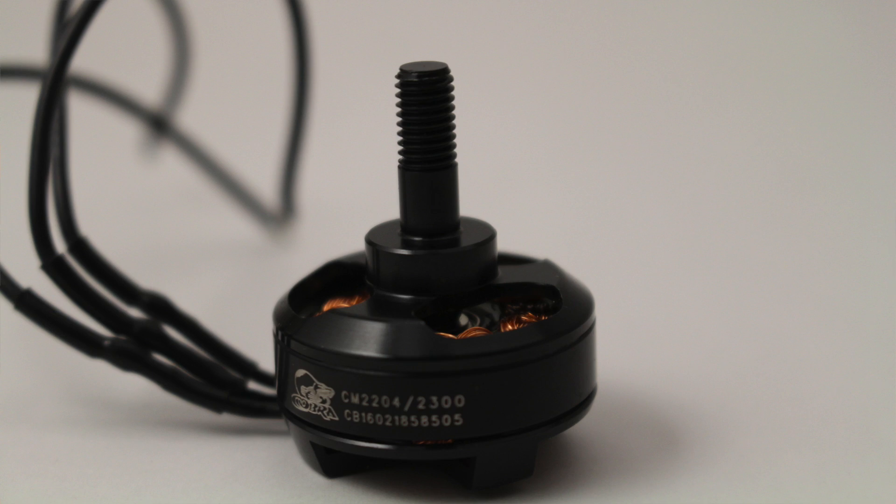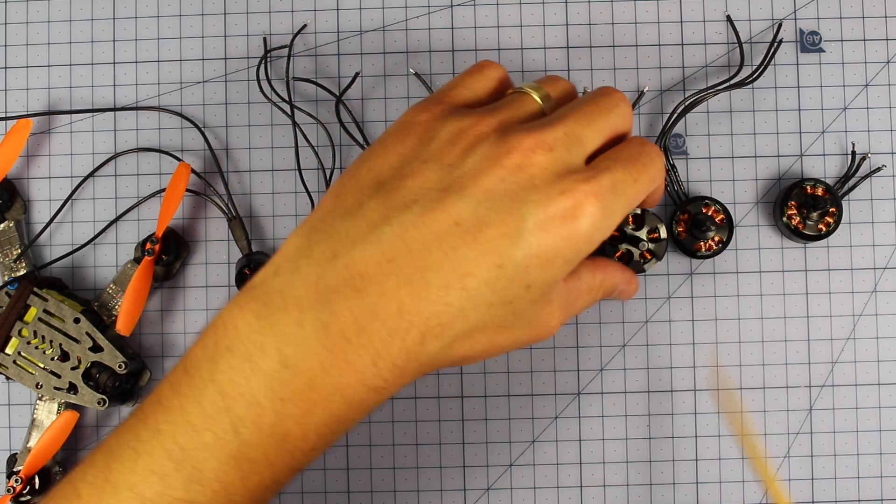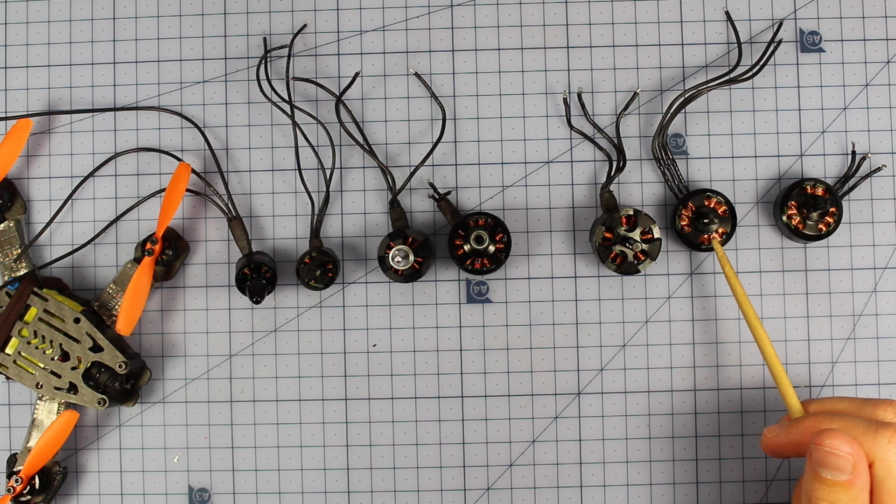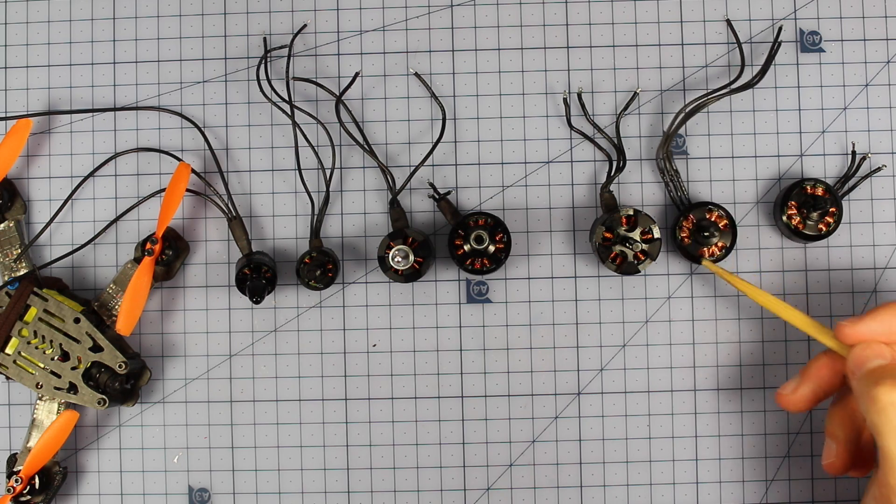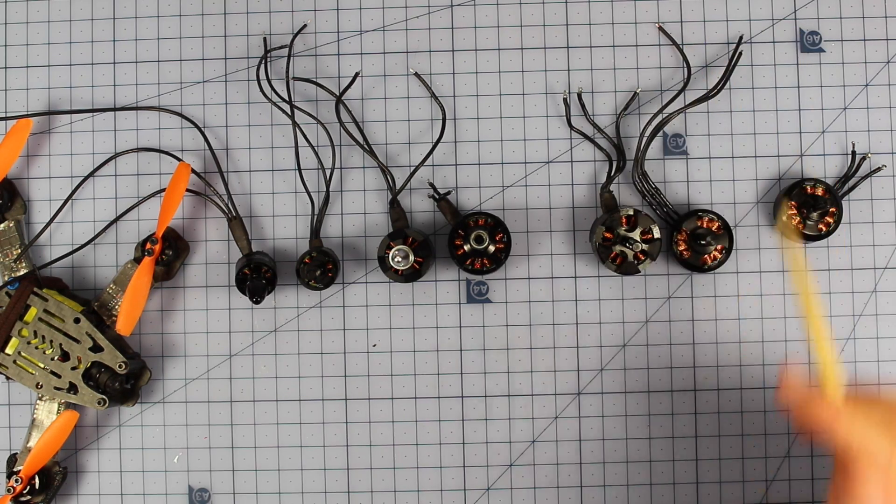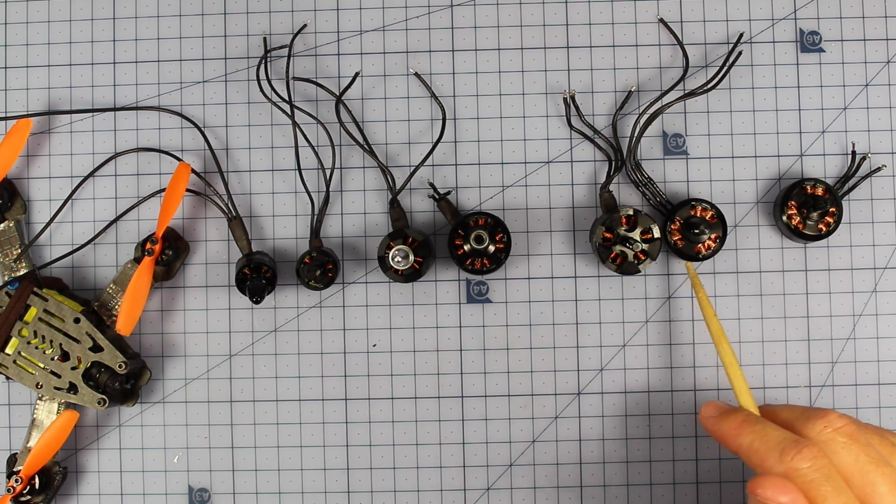And also that's the same stats on the Emax motors. These would be best suited for say either just a six inch tapered prop, or a five inch bullnose prop, or also a five inch tri prop. That's probably what they would be best for, on say a three or four cell lipo.